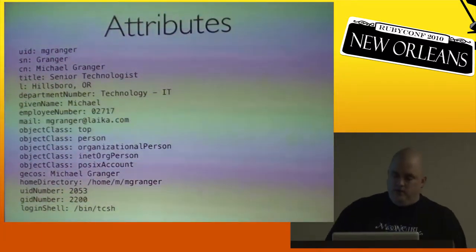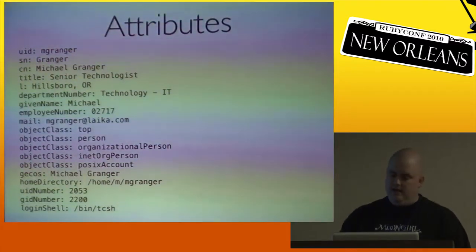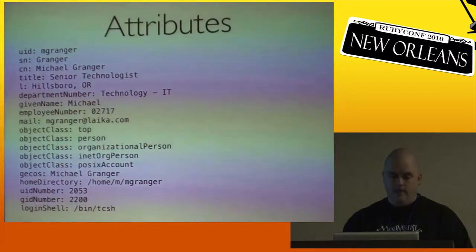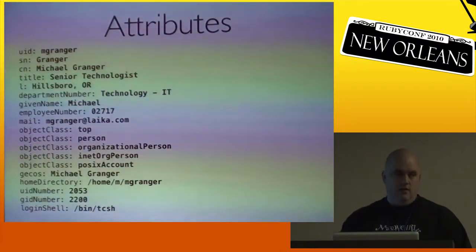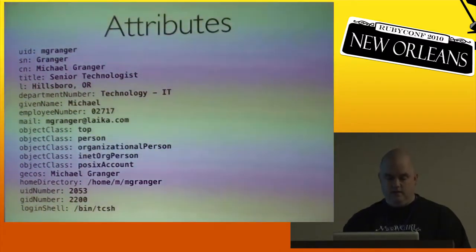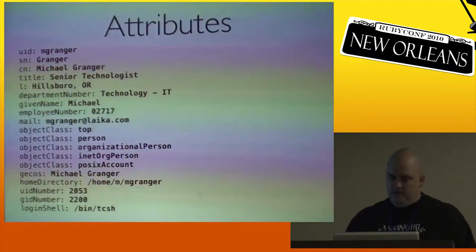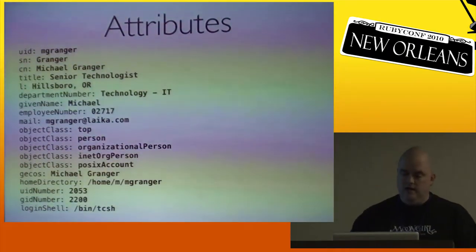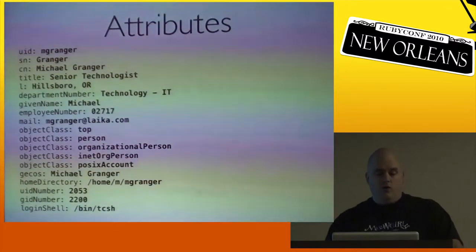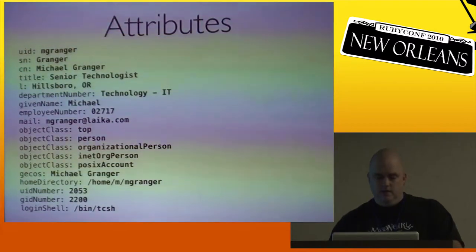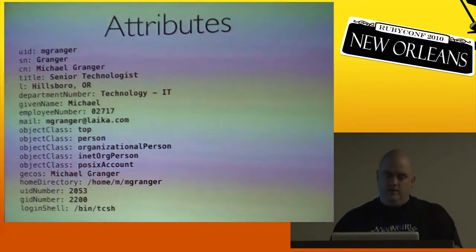Entries are made up of one or more attributes. This is a trimmed-down dump of my user record in LDAP at my day job. An attribute is an attribute description — consisting of a type and optional options — and one or more associated values. They're basically key-value pairs with a few additions. The keys aren't free-form but are defined in the directory schema, referred to as the attribute description, and determine the type of values it can hold, what validations apply, and how it can be searched — not unlike a column in a SQL table. Values are one or more binary chunks of data. You can store an employee photo, voicemail recording, or other binary data in the same entry.